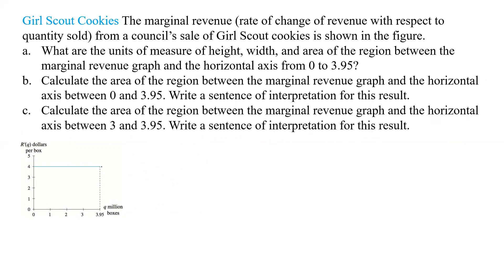So we have this figure with basically just a straight line going across at 4, so it has a height of 4, and it goes up to 3.95. What are the units of measure of height, width, and area of the region between the marginal revenue graph and the horizontal axis from 0 to 3.95? The height is going to be in dollars per box, and the width is in millions of boxes.